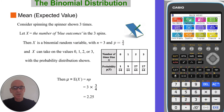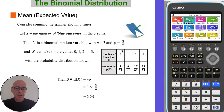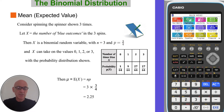So if you consider spinning the spinner shown three times, and define X to be the number of blue outcomes in those three spins, then X is a binomial random variable where n is equal to three for the three trials, and the probability of success for each trial is three quarters. So X can take on the values 0, 1, 2, and 3, and the probability distribution is shown in the table.